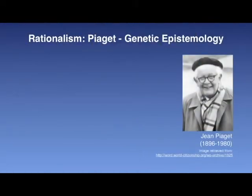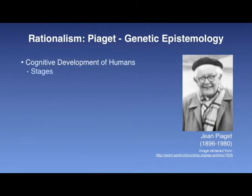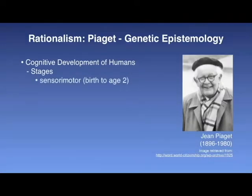The next theory is that of Jean Piaget: Genetic Epistemology. Piaget lived from 1896 to 1980, and his theory, Genetic Epistemology, which also deals with the origins of knowledge, explains the cognitive development of humans from birth throughout life, though the original version of this theory focused only on the younger years. The first stage is sensory motor, from birth to age 2. Infants' understanding of the world is constructed by linking sensory experiences — such as seeing, hearing, and tasting — with physical actions. The second stage is termed preoperational, from ages 2 through 7.